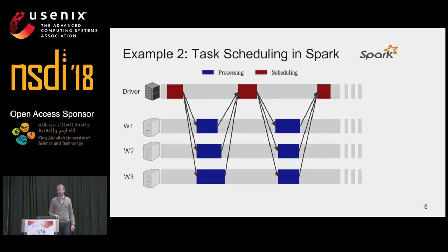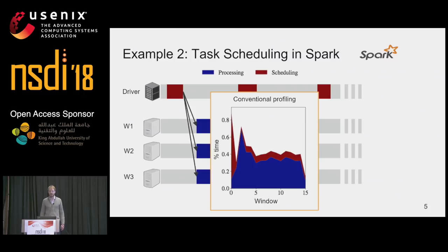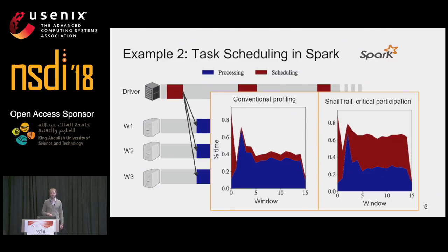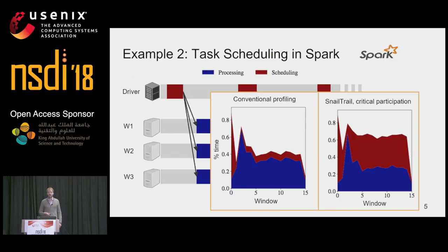The Spark folks have figured that out as well and came up with Drizzle, a recent publication from UC Berkeley that proposes a different scheduling mechanism. Now let's apply conventional profiling on this trace. Conventional profiling gives us a time-based breakdown of where the application spends its time. The blue part — worker processing data — is where most time is spent, and a little bit of time is spent by the driver in scheduling work. This plot does not reveal that the driver is potentially a latency bottleneck. But here we applied SnailTrail with its critical participation metric on the same trace, and it clearly highlights that the scheduling activity performed by the driver is more likely to be a latency bottleneck.